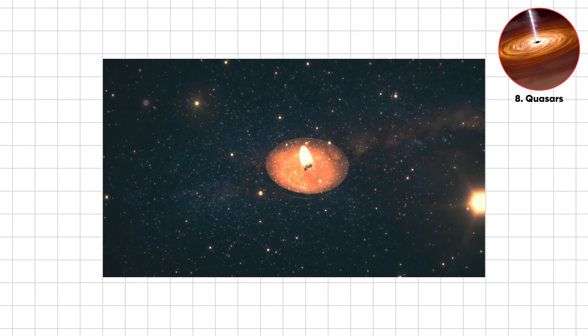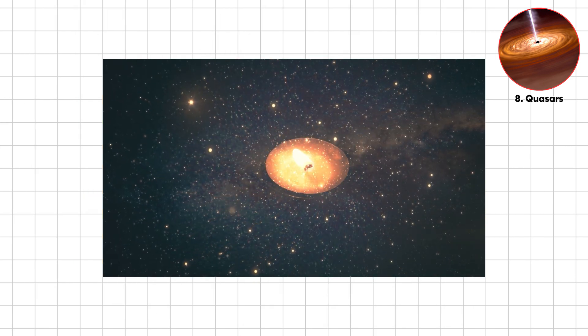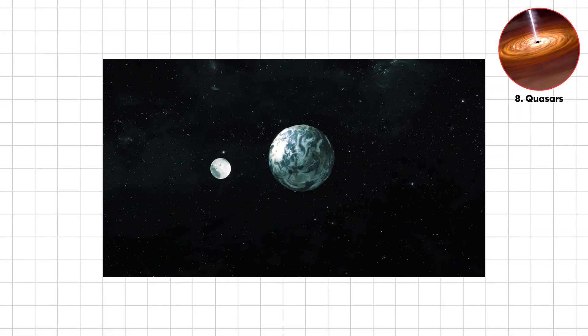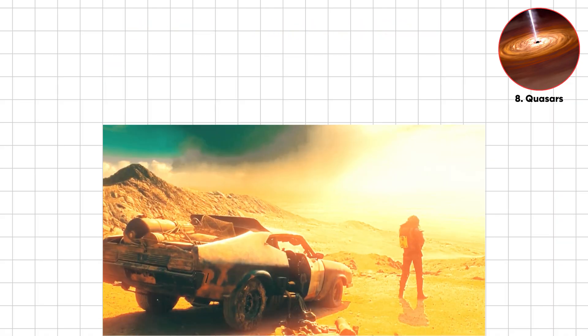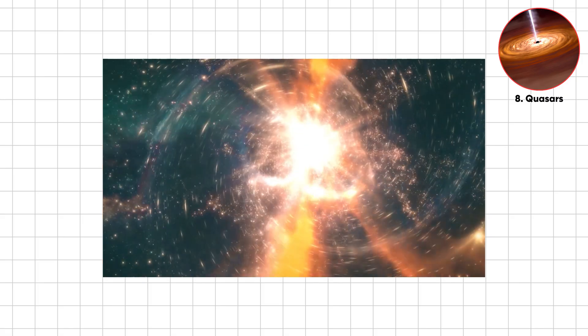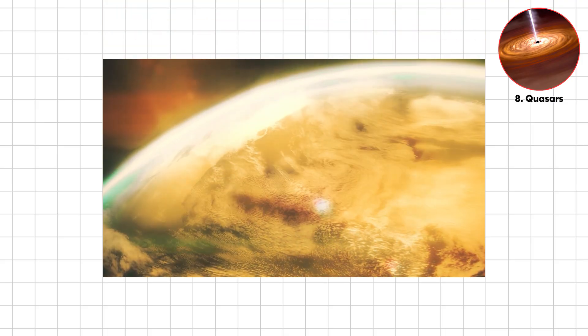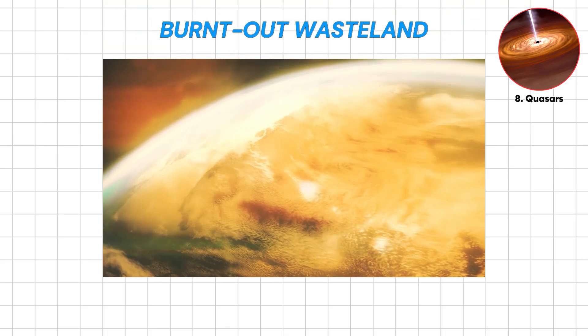Most quasars originated during the early universe, their ancient light just reaching Earth now after billions of years of travel through space. If a quasar flared up near us, it would vaporize our atmosphere faster than a microwave at maximum power, completely transforming Earth into a burnt-out wasteland.